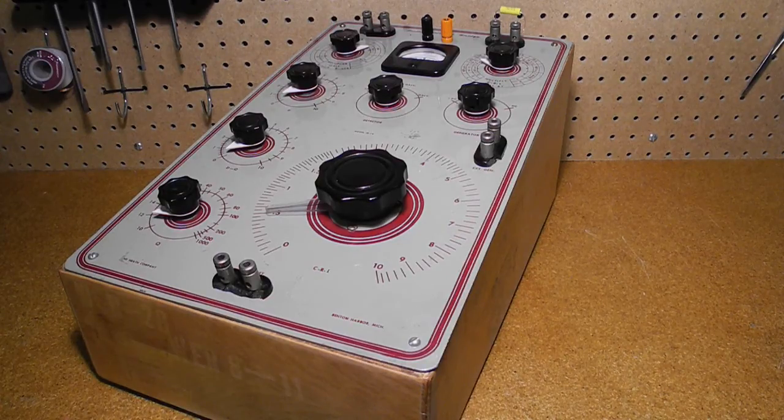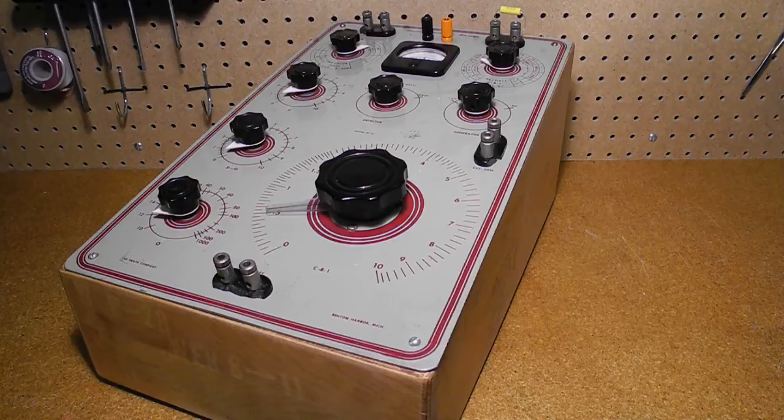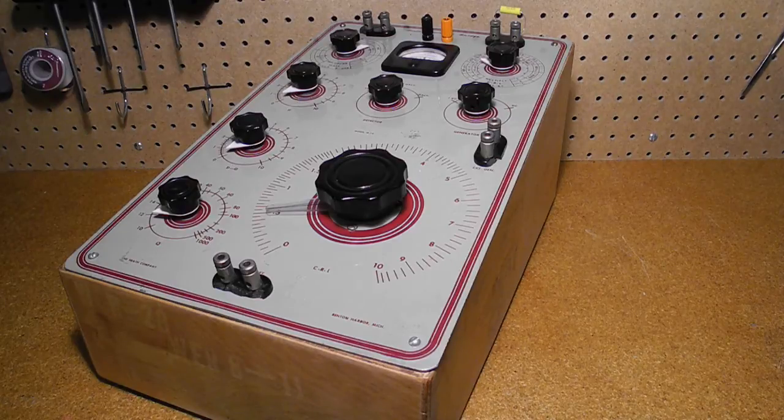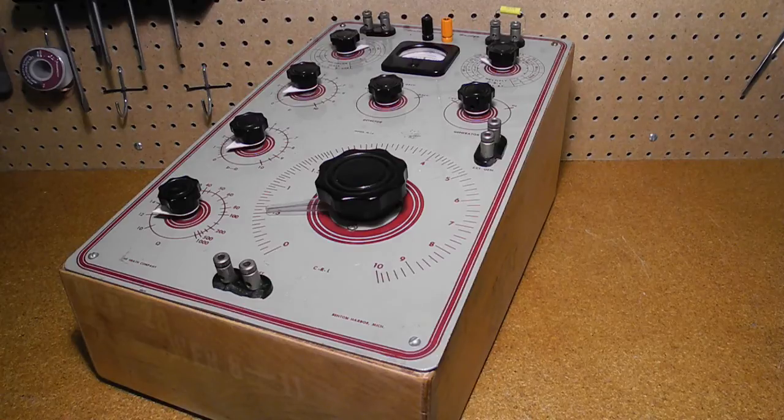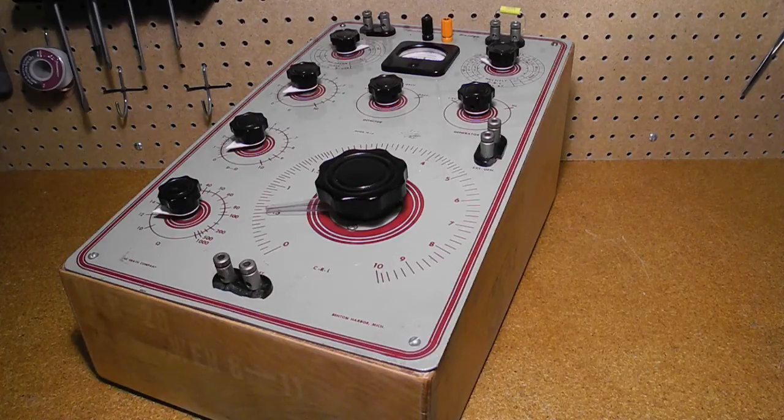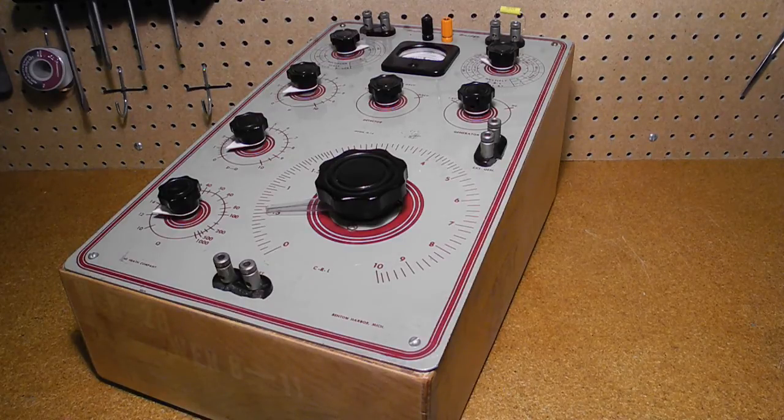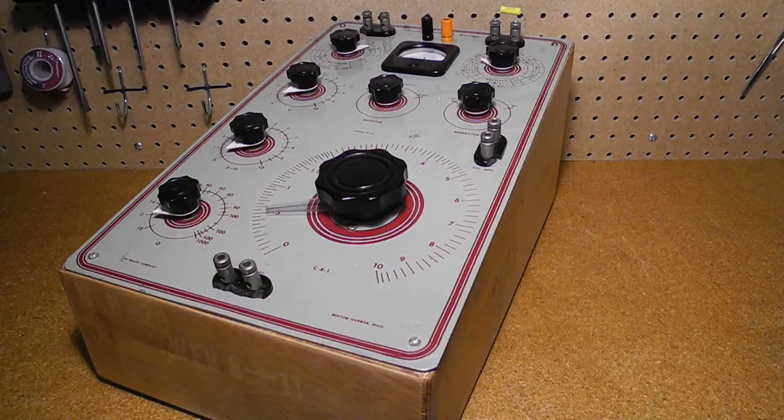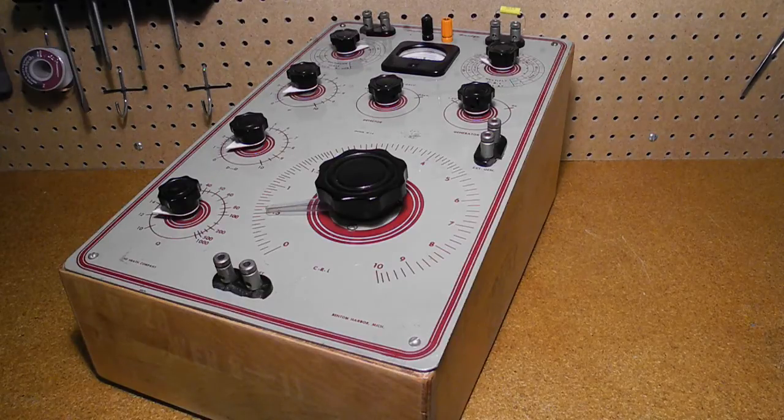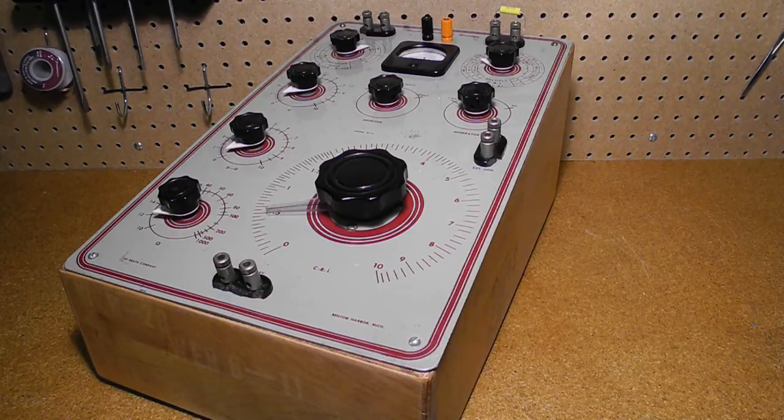The IB-1B is a battery-powered impedance bridge. It was introduced in 1951, and was the successor to the IB-1 from 1950, which was almost identical. It's not clear how long it was offered by Heath Kit. One source says until 1966, but this is doubtful, as the IB-2, which came out in 1952, appears to be the successor to the IB-1B.